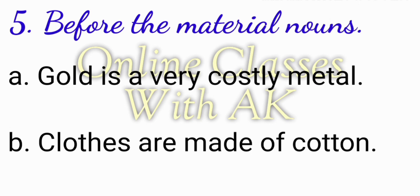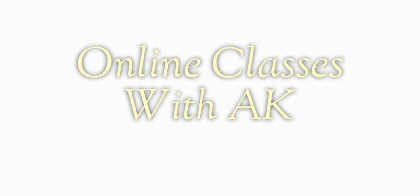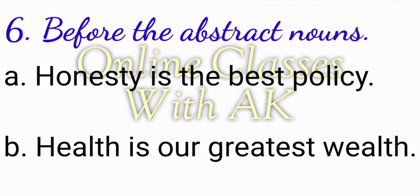We also don't use articles before material nouns. For example: 'Gold is a very costly metal.' 'Clothes are made of cotton.' No articles are used in either sentence. Similarly, we do not use any articles before abstract nouns. Examples: 'Honesty is the best policy.' 'Health is our greatest wealth.' We don't use any article before these words, and while doing exercises you should also follow this rule.